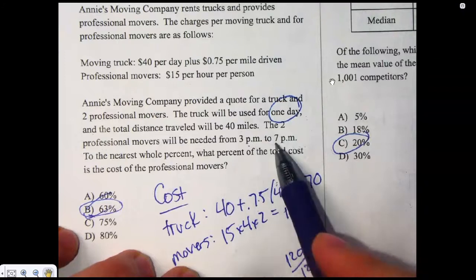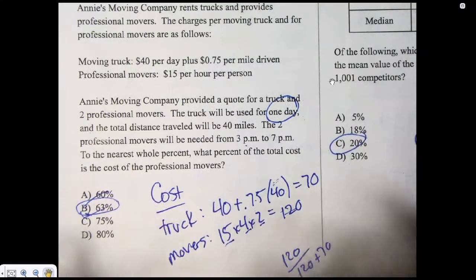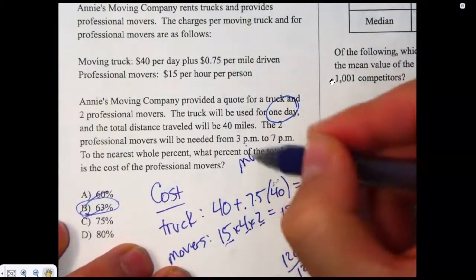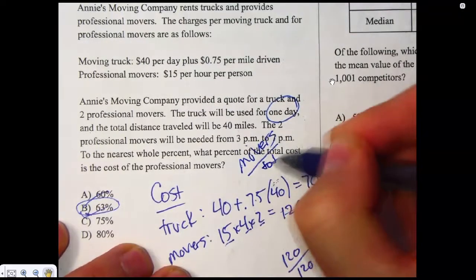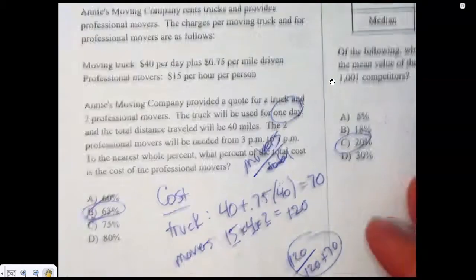Two movers from three to eight. So you're paying for, you're paying $15 an hour for four hours, two people. That's $120. And then what percent of the total cost is the movers? So you're doing movers divided by total, which is what I'm doing there. And if you divide that, you get 0.63.